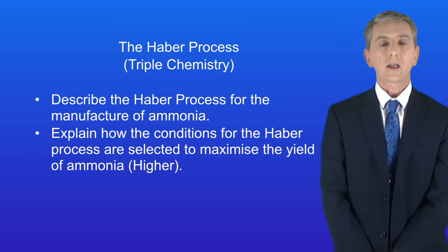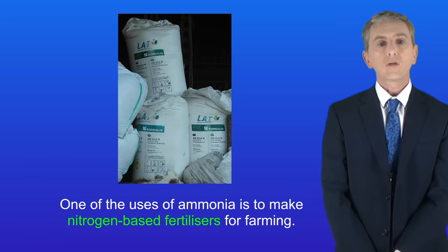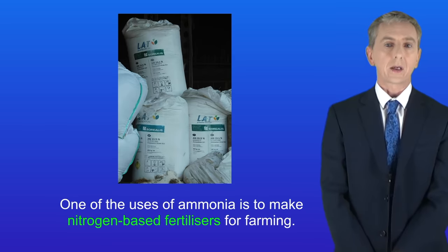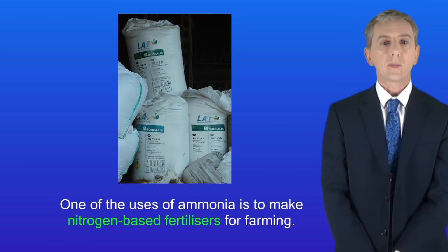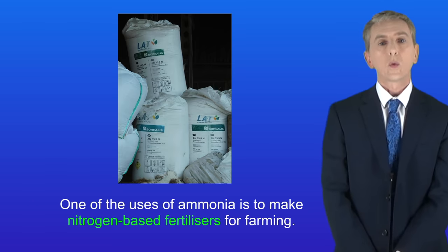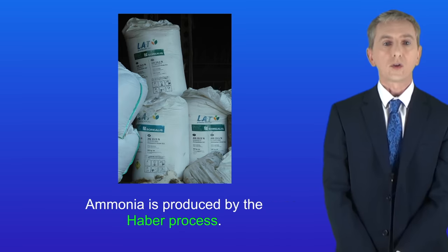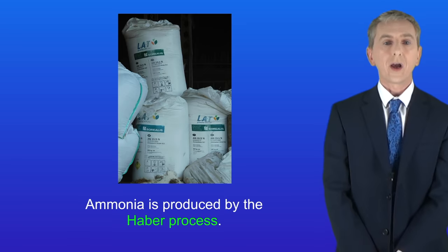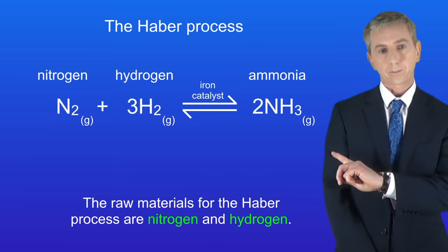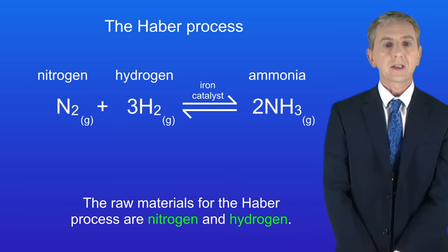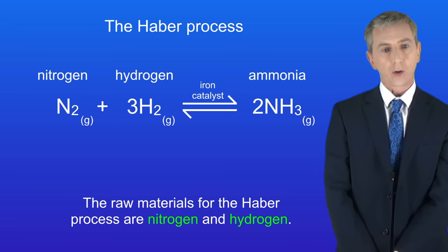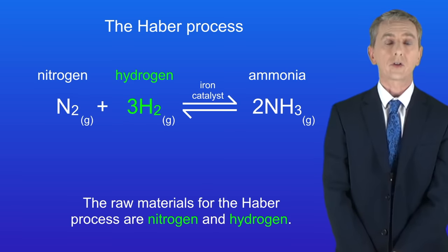In this video we're looking at how to make ammonia. Ammonia is a really useful chemical and one of its uses is to make nitrogen-based fertilisers for farming. We'll be looking at fertilisers in more detail in the next video. Ammonia is produced by the Haber process — the equation shows that the raw materials are nitrogen and hydrogen.